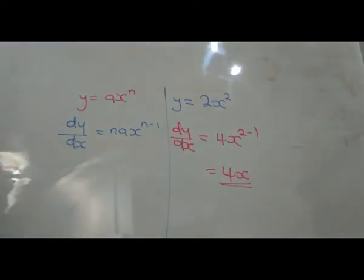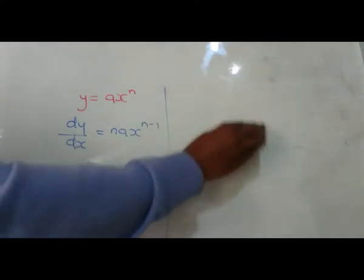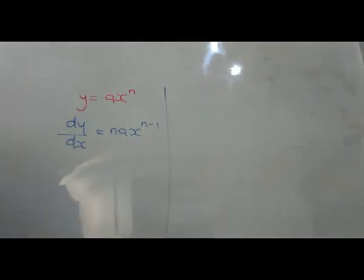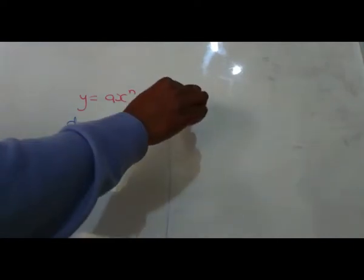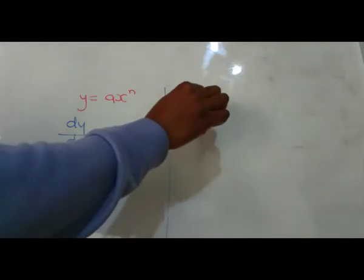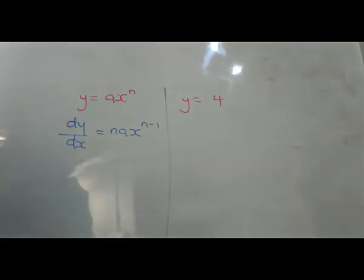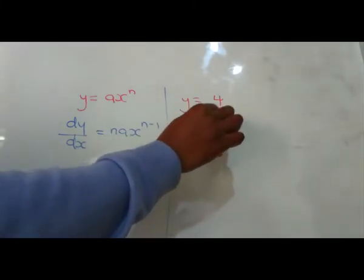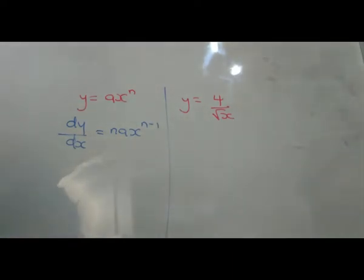That's how you go about it in differentiation. Let's look at another number, maybe one with a square root. Differentiate with respect to x: y equals 4 over the root of x.